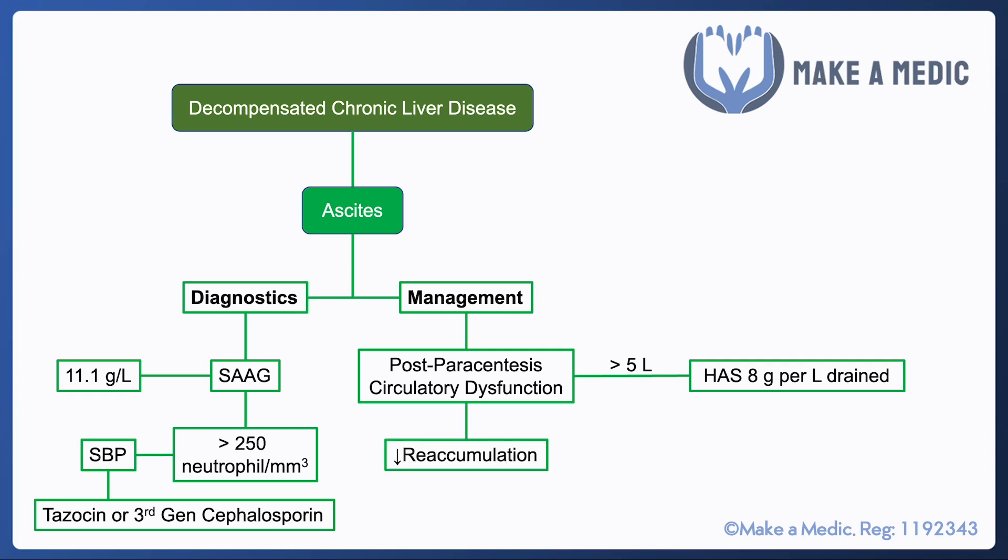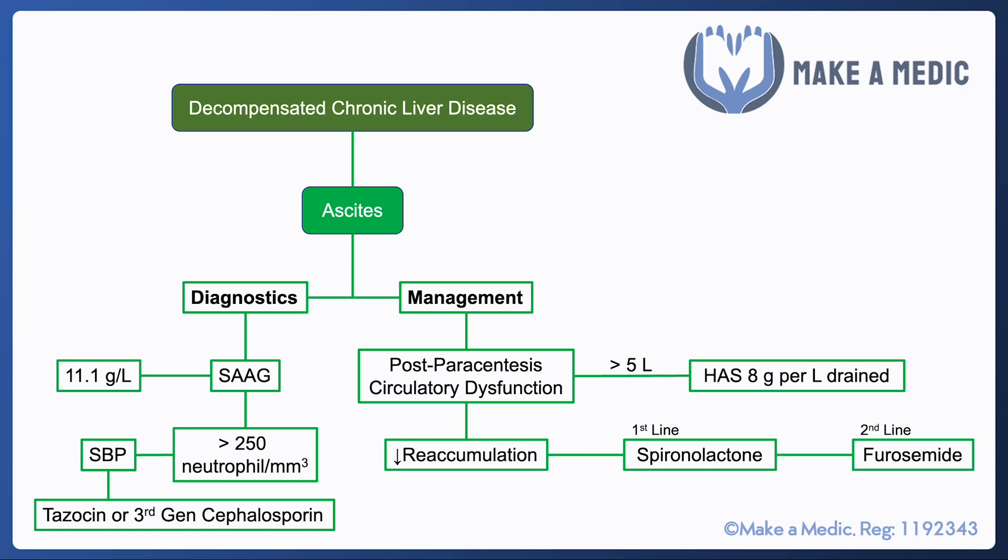The other aspect of managing ascites is to prevent reaccumulation. The main diuretic used to reduce fluid accumulation in patients with decompensated chronic liver disease is spironolactone, and as a second line we can use furosemide.